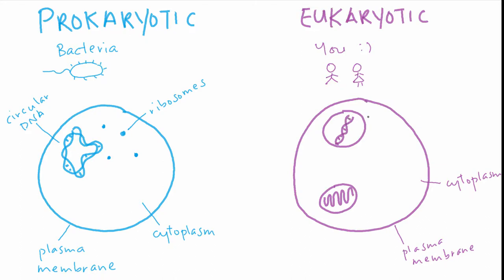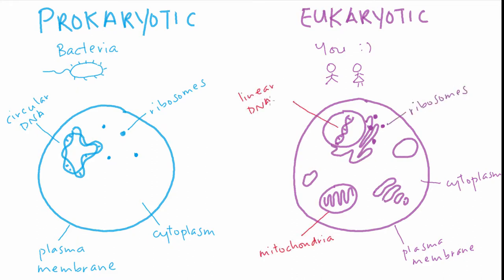Another important difference is that the DNA is now linear and packaged into chromosomes inside the nucleus. In fact the term eukaryote describes this — eu meaning true and karyon meaning nucleus. In contrast the pro in prokaryote describes that they arose before the nucleus. These simple prokaryotic cells are the evolutionary ancestor of eukaryotic cells which allowed for the evolution of complex multicellular life.